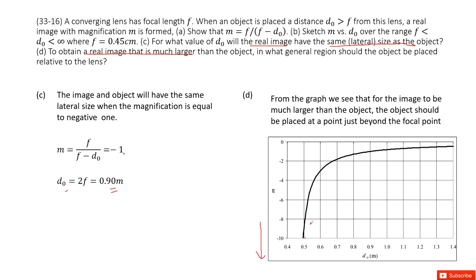So it is just we can see it should be there. So this is the focal length f. So that means the object should be placed at a point just beyond the focal point.